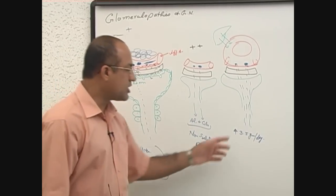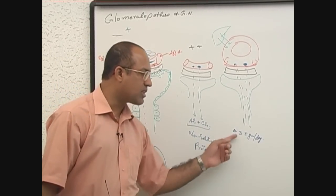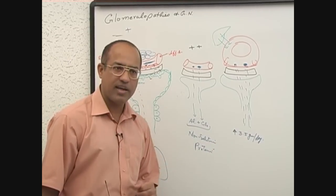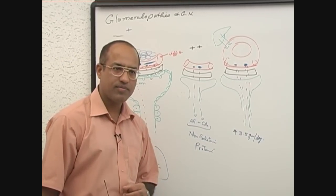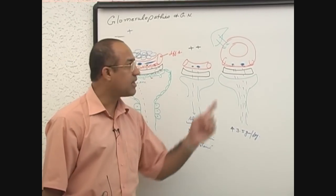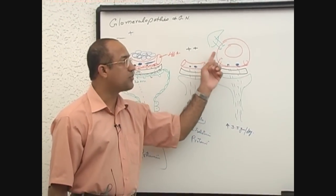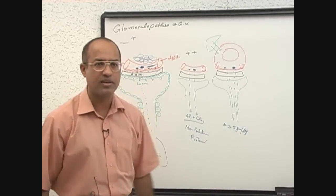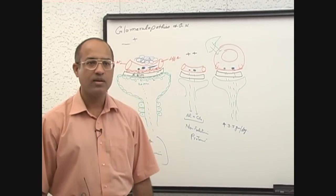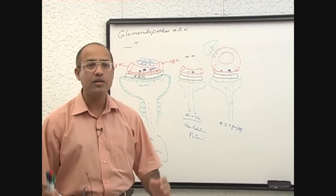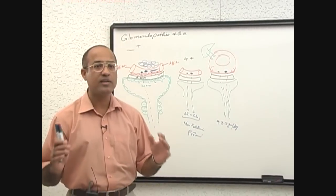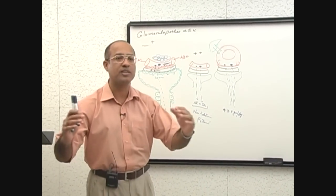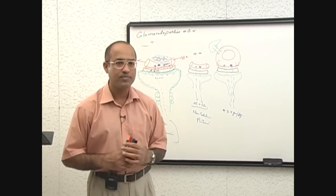If proteinuria becomes more than 3.5 grams per day, then the liver, in spite of its full compensatory effort, will not be able to maintain plasma protein concentration at an appropriate level.